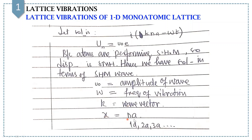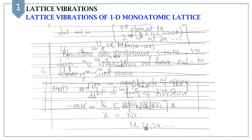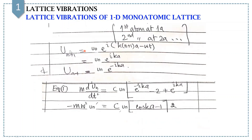Here X equals Na, where N starts from 1 and A is the lattice constant. So X equals 1A means we are talking about the first neighbor, and 2A means the second neighbor of the Nth atom and so on. Then U_{N+1} equals U_0 e^{i(k(N+1)a − ωt)}, which simplifies to U_N e^{iKa}. And similarly, U_{N-1} equals U_N e^{−iKa}.